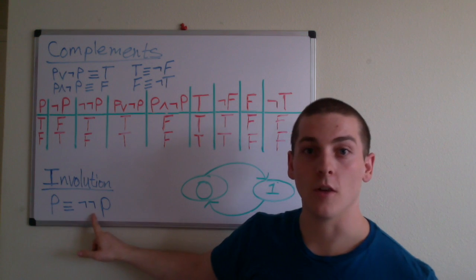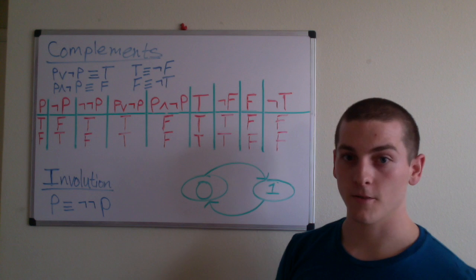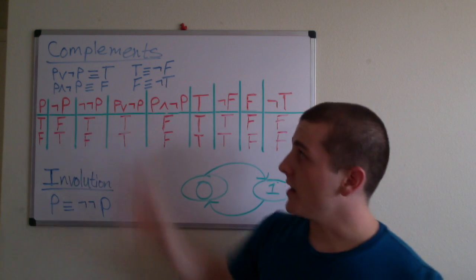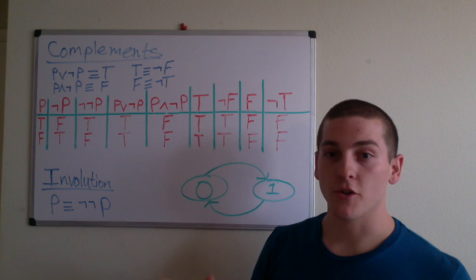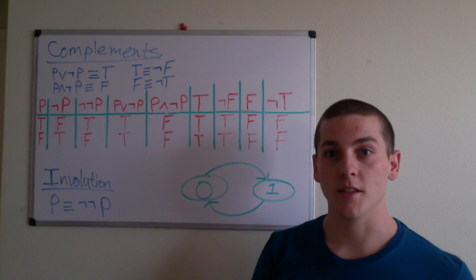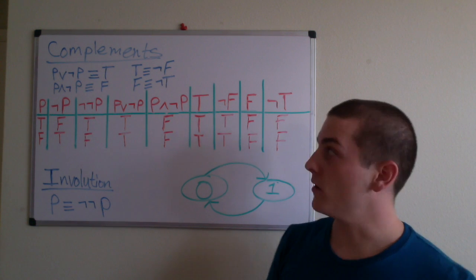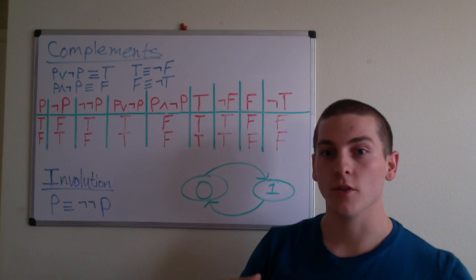We then analyze the law of complements, which tells us that the disjunction of P and its negation not P will be the logical equivalent of the true value. So it is known as a tautology - it is always true.